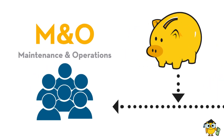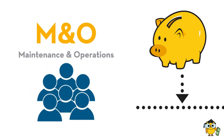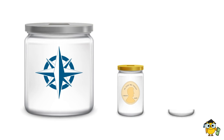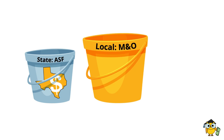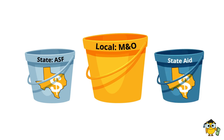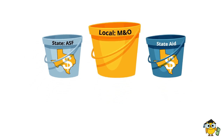Now let's look at how a school district receives revenues on the M&O side. Revenues here come into three separate jars: the tier one entitlement, tier two golden pennies, and tier two copper pennies. Filling these jars will come from a combination of the following buckets: the state of Texas's available school fund, local M&O collections, and additional state aid. There is one more jar for recapture, which is used when excess funds are sent back to the state.